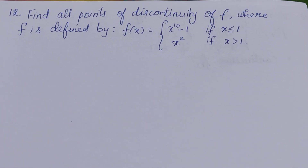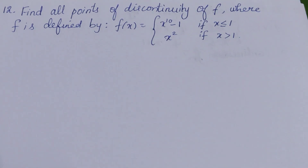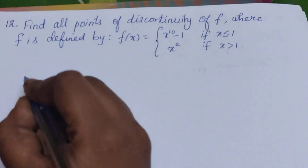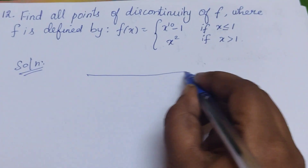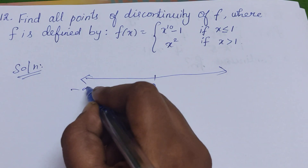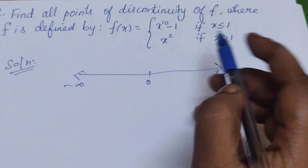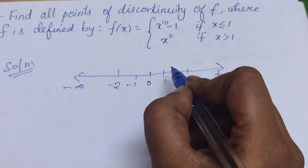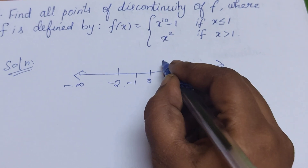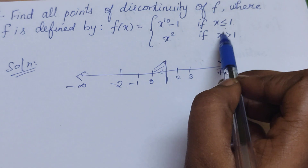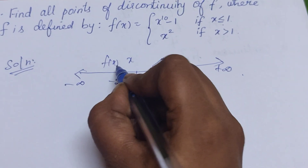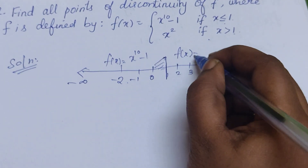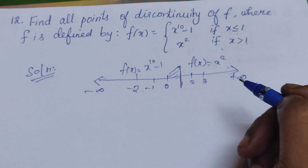We will discuss problem number 12 of exercise 5.1. They have given a function f(x) and are asking for the points of discontinuity. First, we will know the domain of the function. When the value of x is less than or equal to 1, the function is f(x) = x^10 - 1, and when x is greater than 1, the function is x².